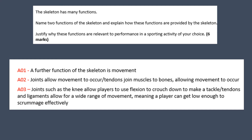For AO3, we've got a link to our sporting activity — rugby. Joints such as the knee allow players to use flexion to crouch down to make a tackle. Tendons and ligaments allow for a wide range of movement, meaning a player can get low enough to scrummage effectively. So we've given some specific examples from the sport of rugby.